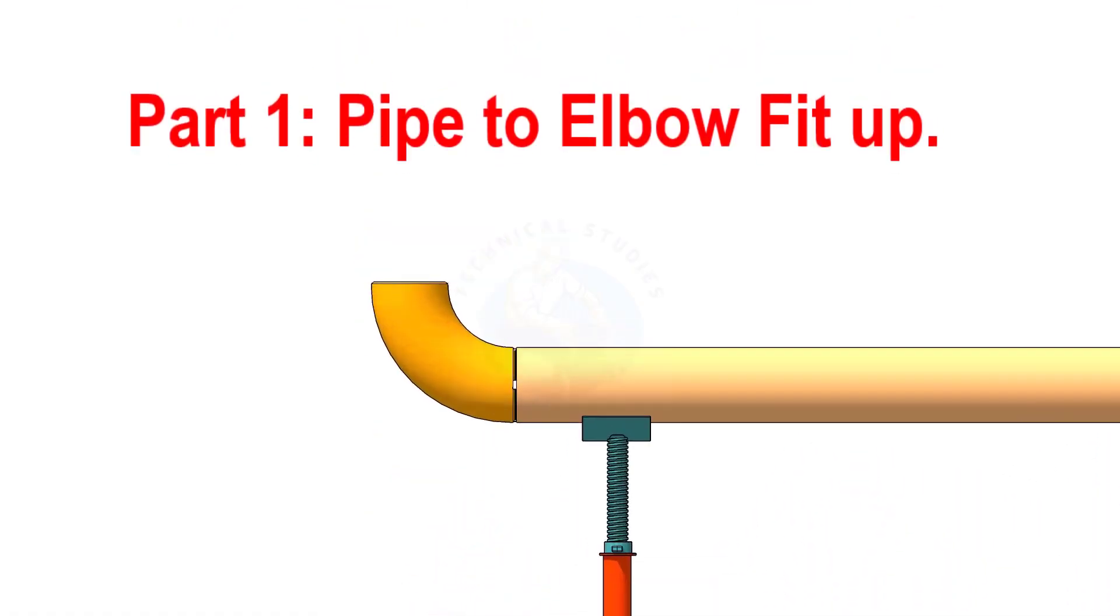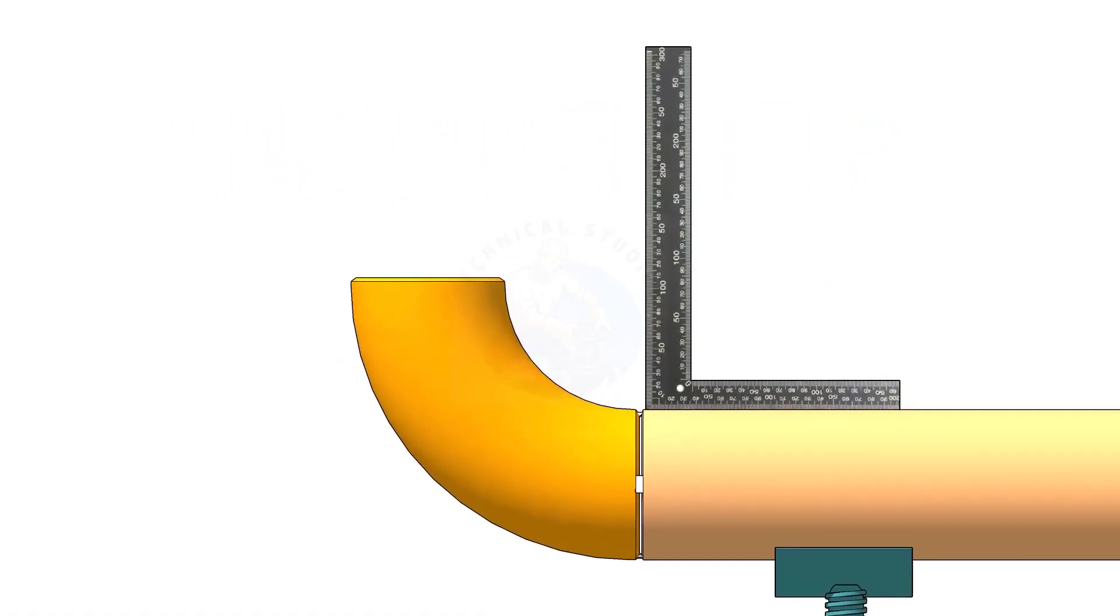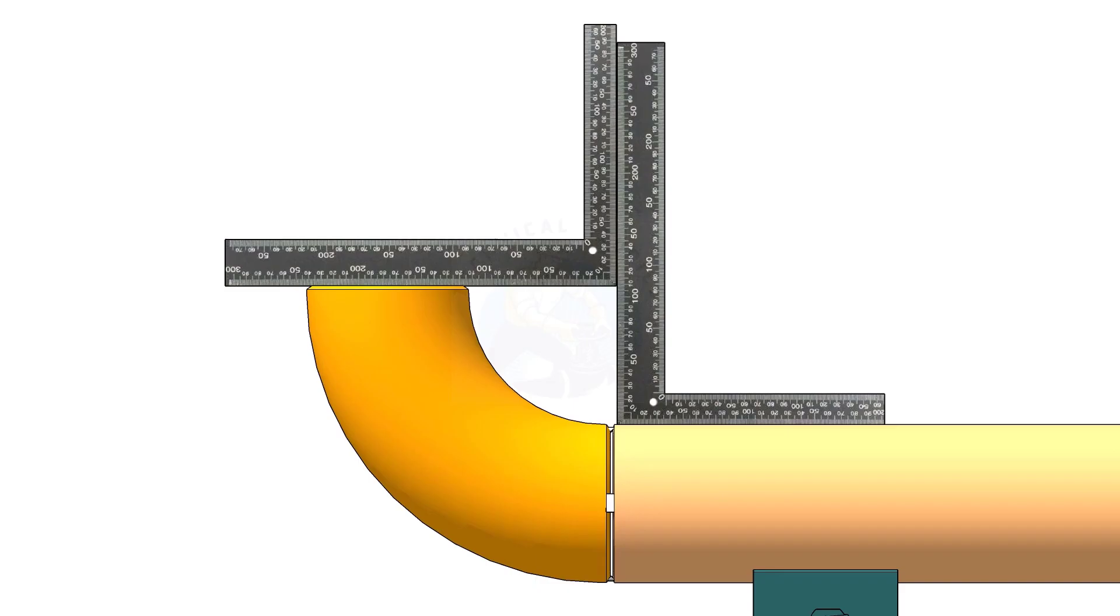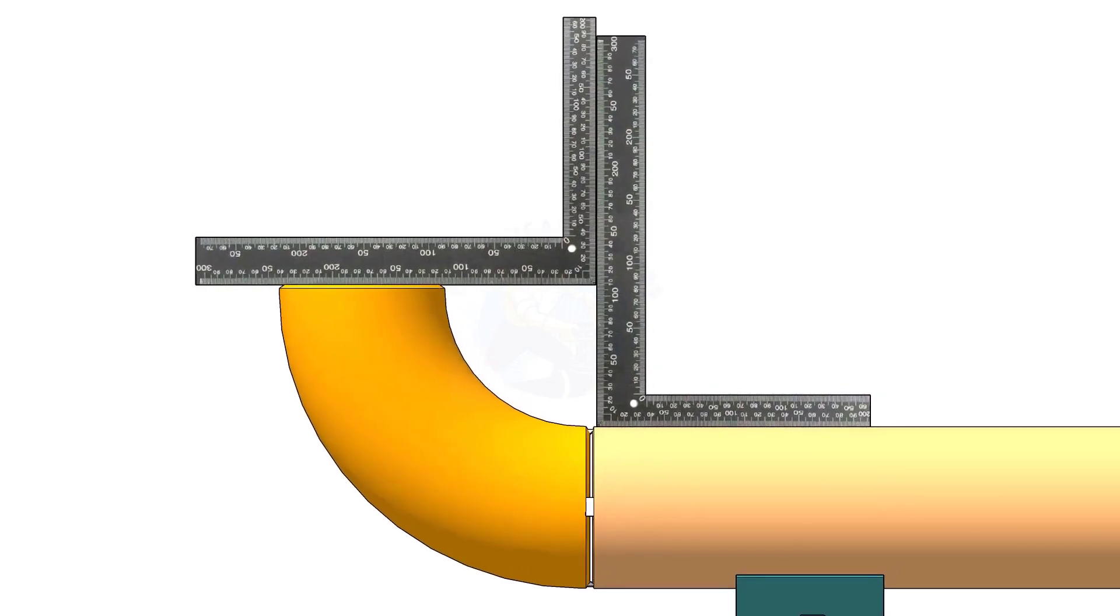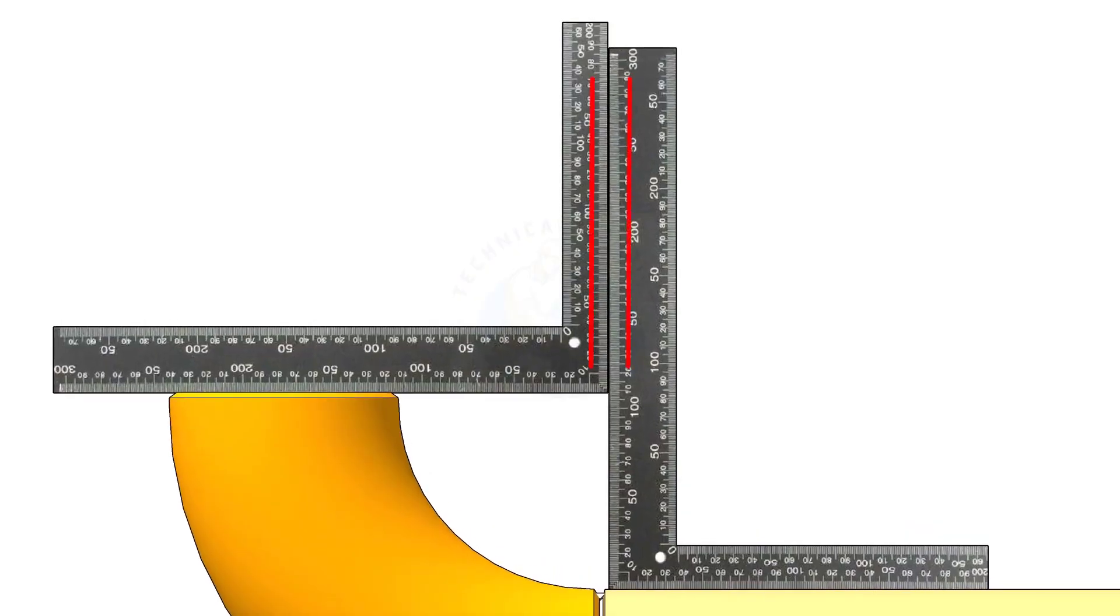There are different methods to check the fit up of an elbow to a pipe. One method is hold right angles on the pipe and on the elbow and check the gap. If the right angles are parallel, the fit up is correct.